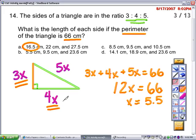This other leg of my right triangle has a length of 4 times x, which gives us a value of 22. And the hypotenuse has a length of 5x, which is 27.5 centimeters. So the correct answer is A.